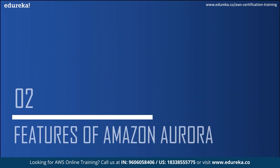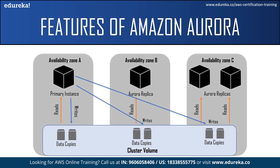Let us first understand what Amazon Aurora DB clusters are. An Amazon Aurora DB cluster consists of one or more DB instances and a cluster volume that manages the data for those DB instances. A DB instance is an isolated database environment running in the cloud, and a cluster volume is the virtual database storage volume that spans across multiple availability zones, with each availability zone having a copy of the DB cluster data.